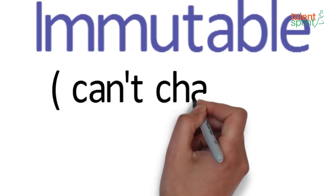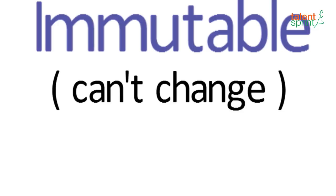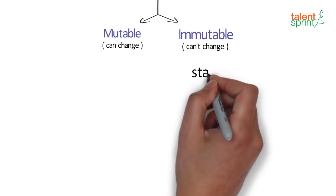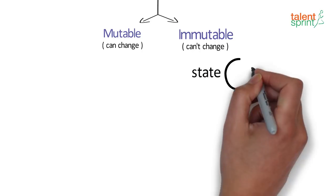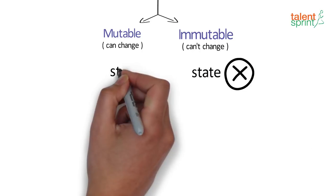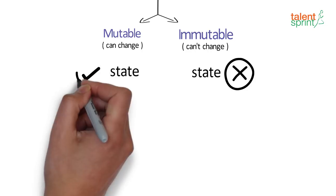The meaning of these words remains the same in IT context. An immutable object is an object whose state cannot be modified after it is created, while the state of a mutable object can be changed throughout the program.